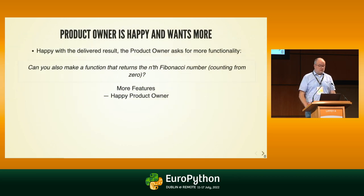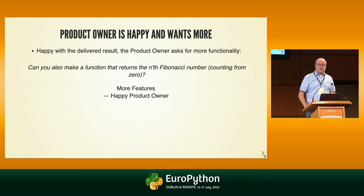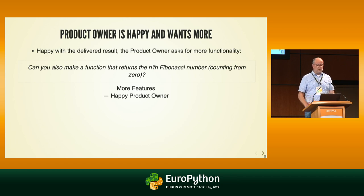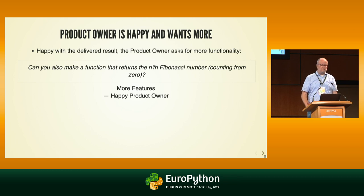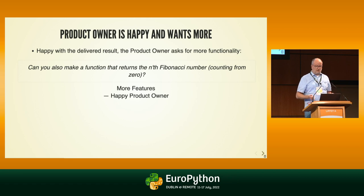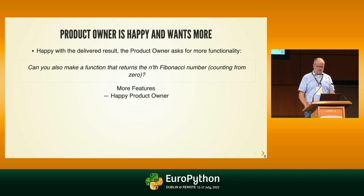You present that to the product owner, who is happy, then asks for another function: one that returns the nth Fibonacci number by index, zero-based. So Fibonacci number at index zero is the first Fibonacci number, index one gives the second Fibonacci number, and so on.